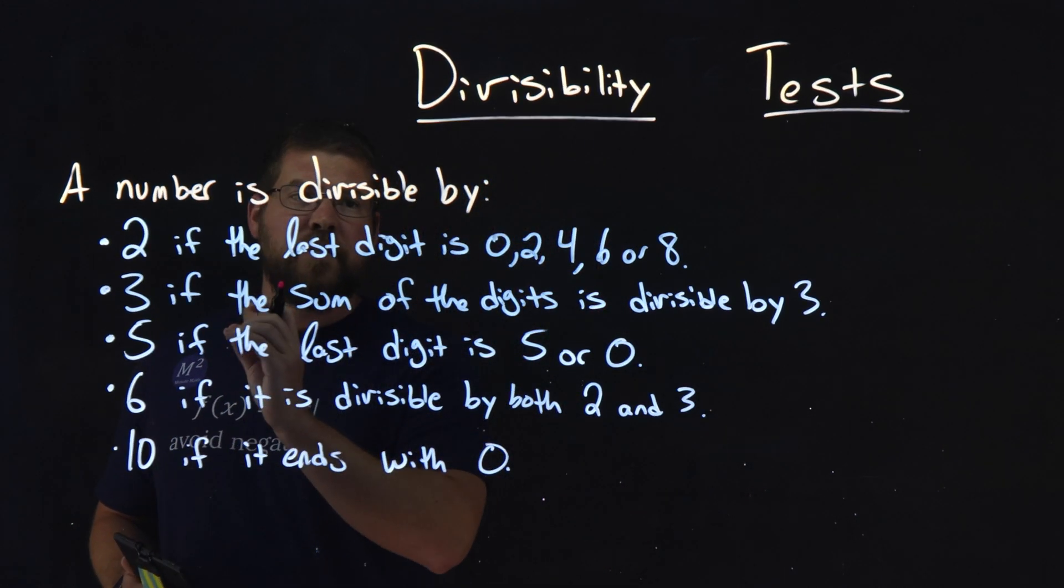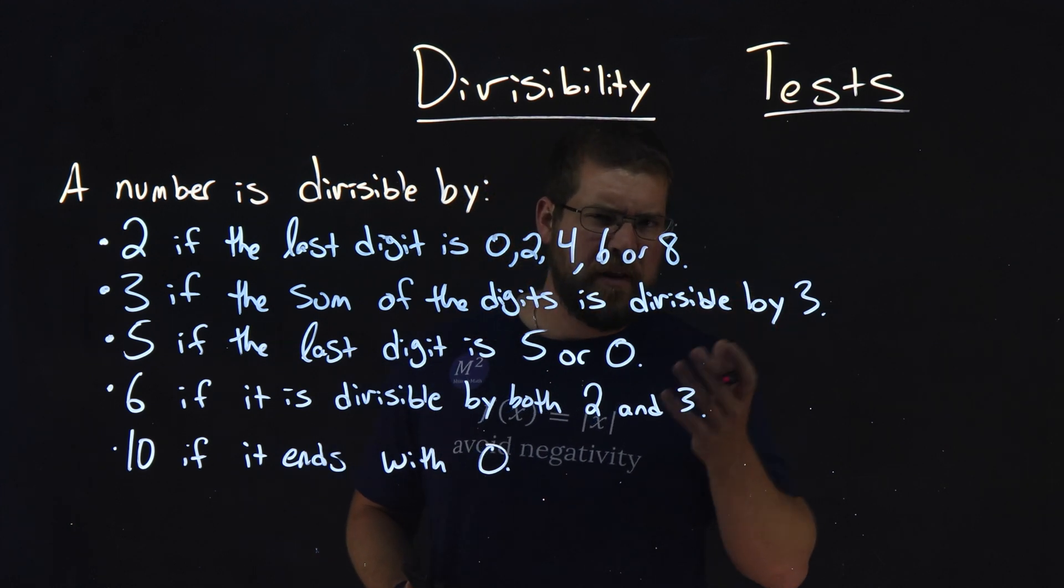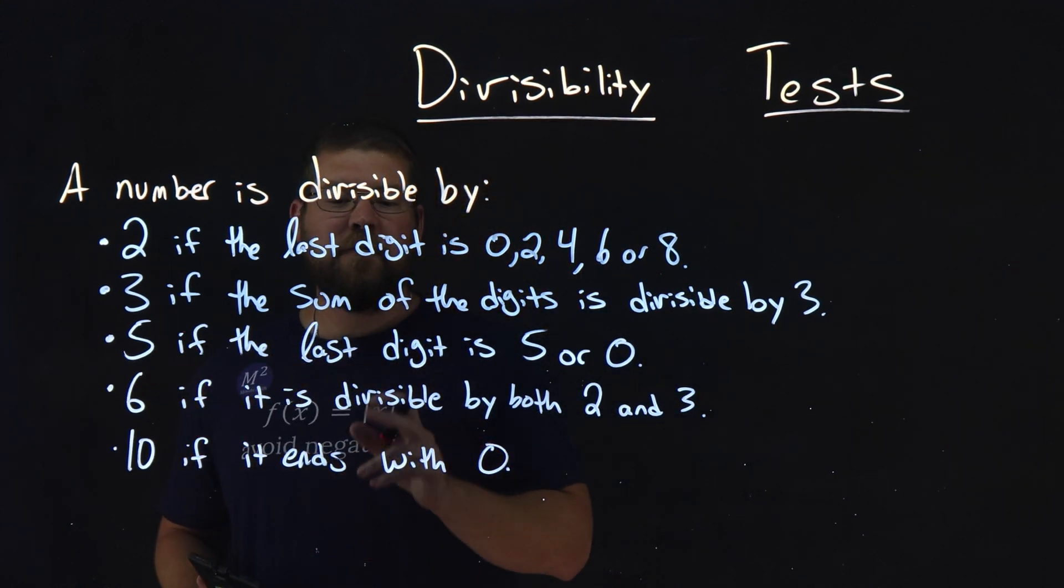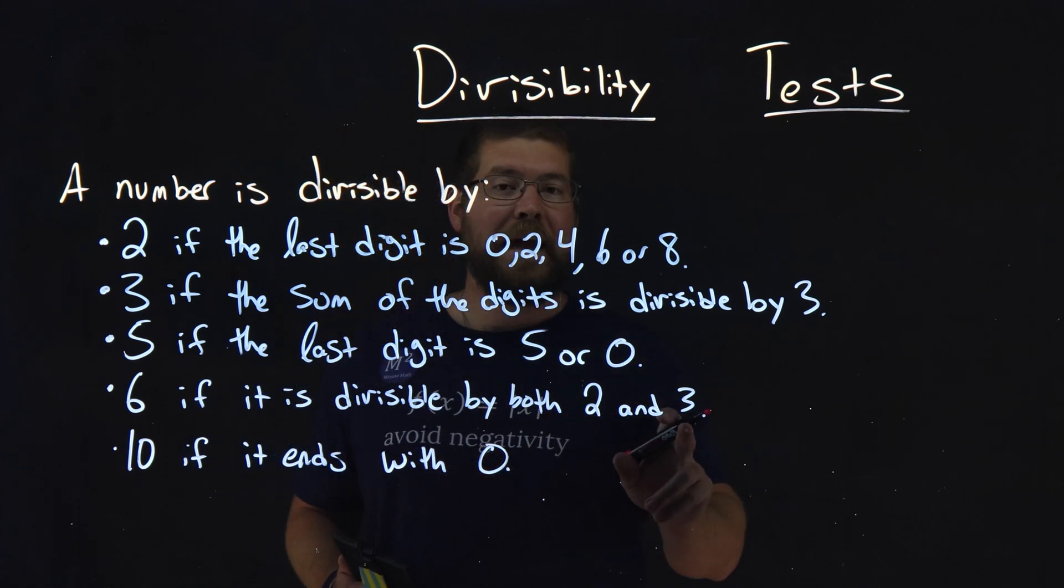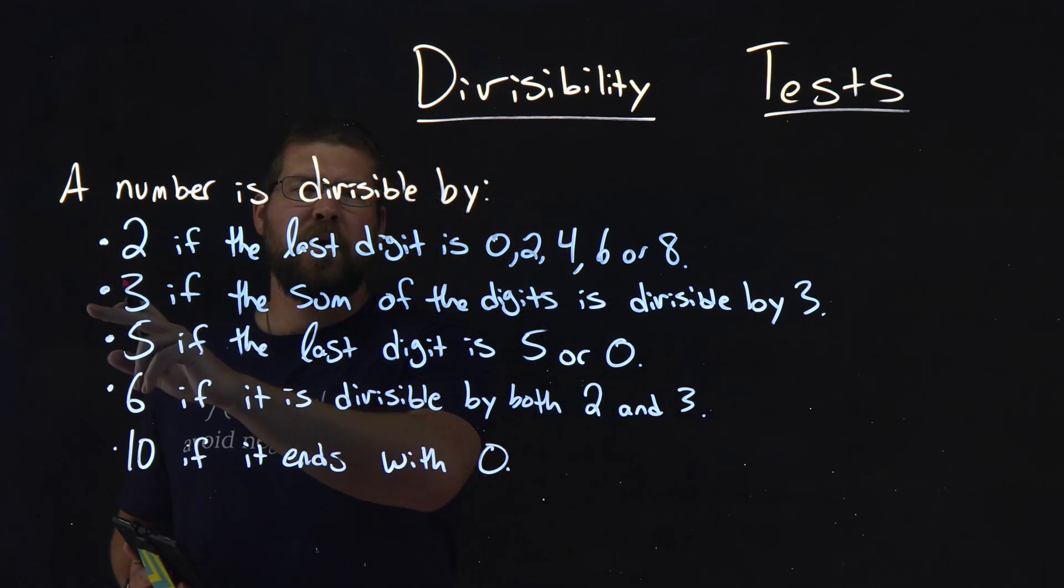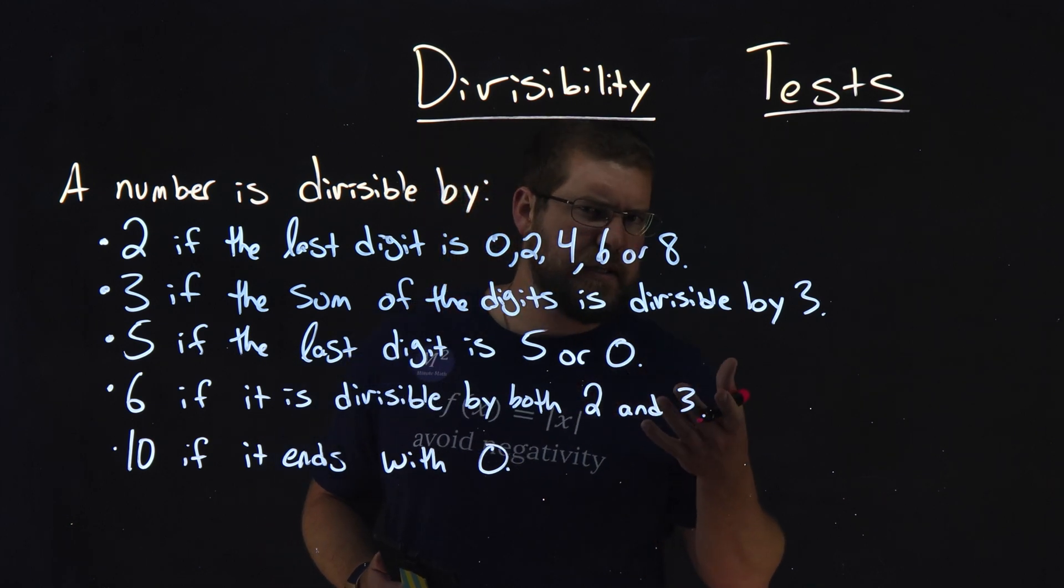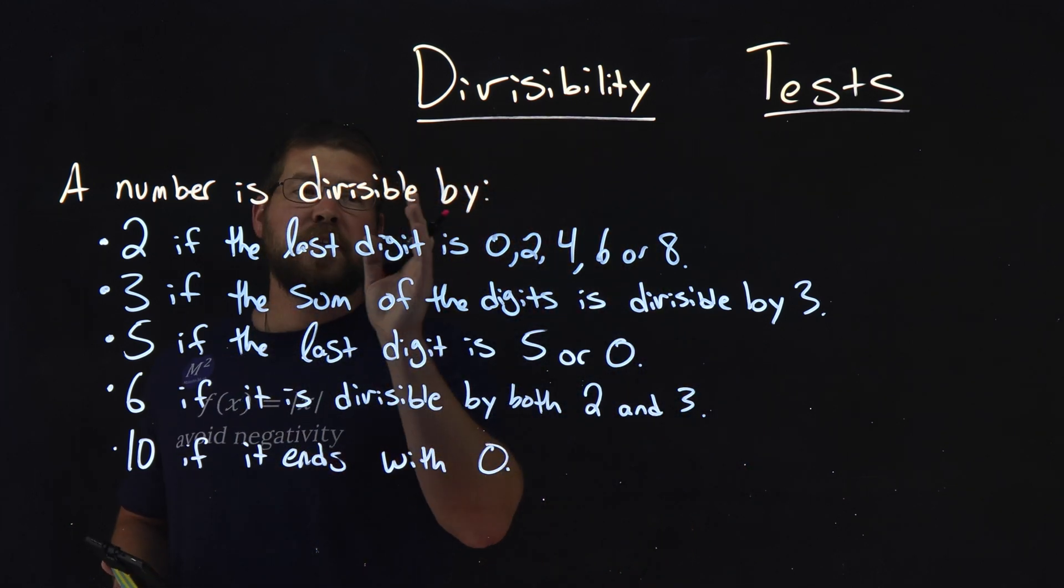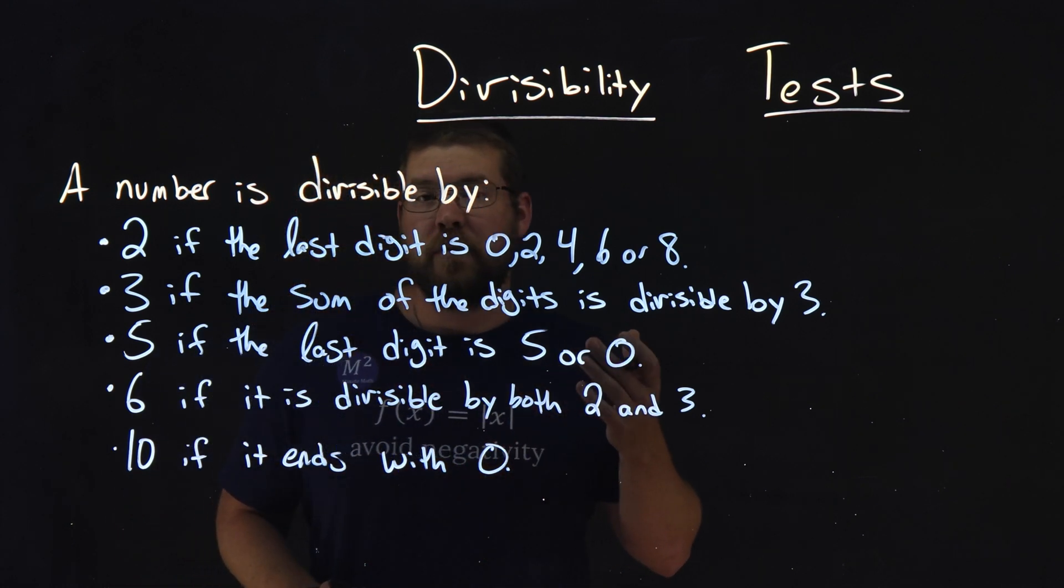5. A number is divisible by 5 if the last digit is 5 or 0. That's pretty simple. A number is divisible by 6 if it is divisible by both 2 and 3. It's got to be both of them, which makes sense because 2 times 3 is 6. Lastly, easiest one in my book, a number is divisible by 10 if it ends with 0.